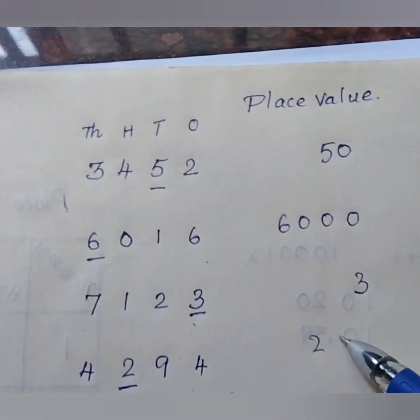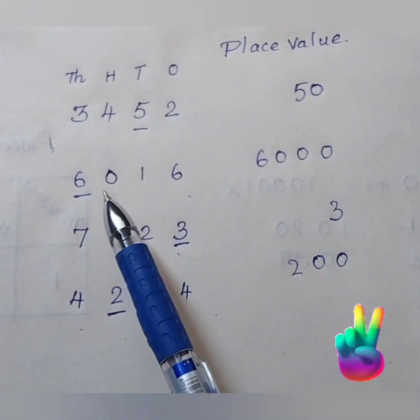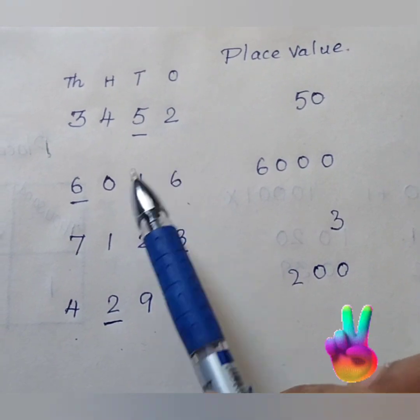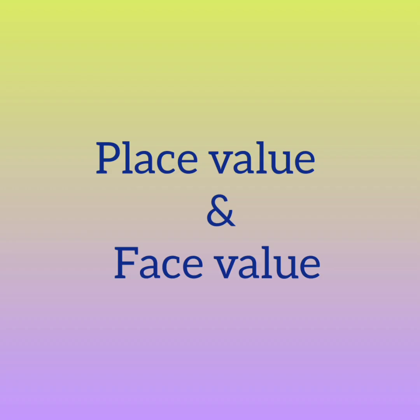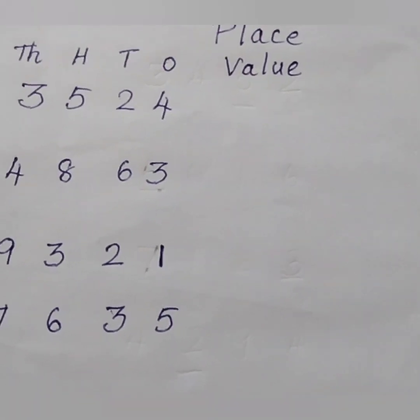I hope now you have understood how to find the place value of different digits. Next I am going to show you the difference between place value and face value. A face value of a digit describes the value of the digit itself. You will understand more clearly with these examples.